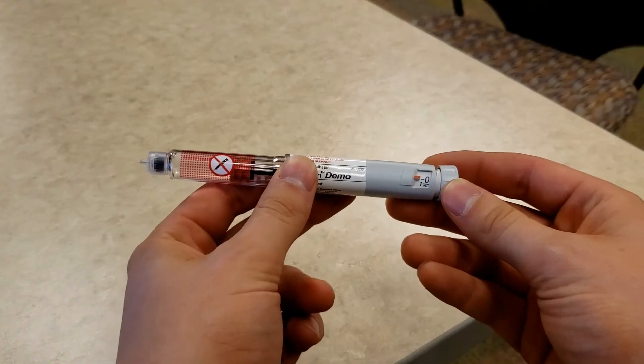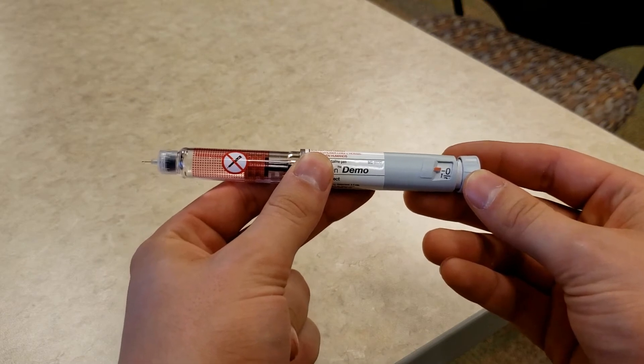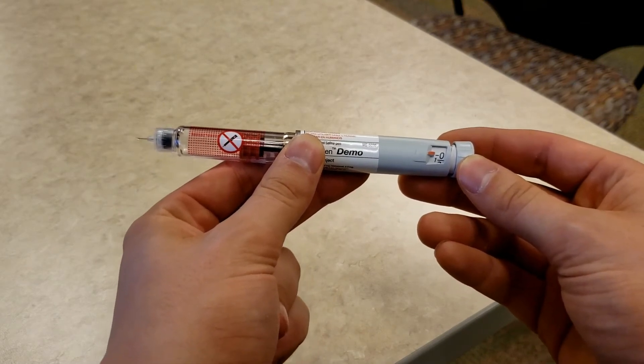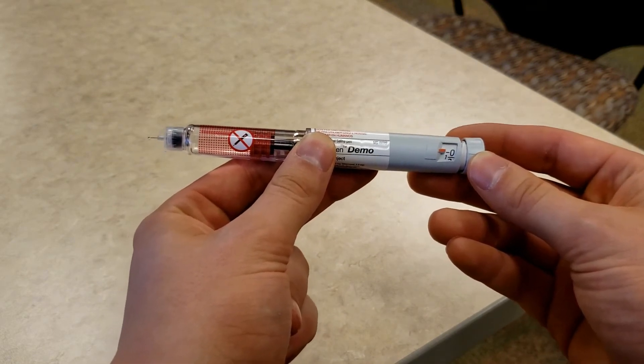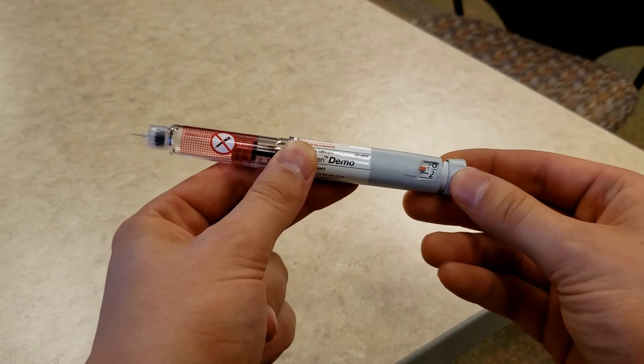The next step is to prime the insulin pen. This is done to ensure that the insulin pen is dispersing the medication properly. To prime the insulin pen, turn the dial at the bottom of the pen to two units and hold the pen so that the needle side is pointing up.